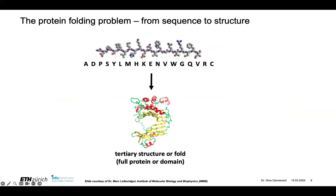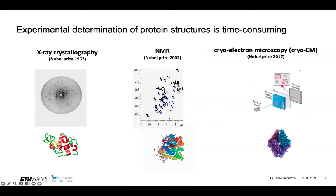This is a long-standing problem in biology: the protein folding problem. We have the sequences — the sequences are easy to get — but we want the structure. The structures are experimentally hard to determine. There are three ways to do it: X-ray crystallography, NMR, or cryo-EM. But these are all very time-consuming — weeks, months, years it can take to get the structure experimentally.